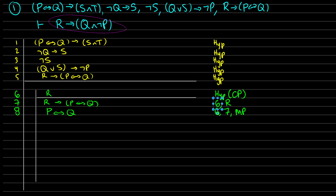Now I have P↔Q, and in line 1 I see P↔Q→(S∧T). So I'm going to reiterate that — line 1 reiteration — and I can use modus ponens again to get S∧T. That is from lines 8 and 9, modus ponens.